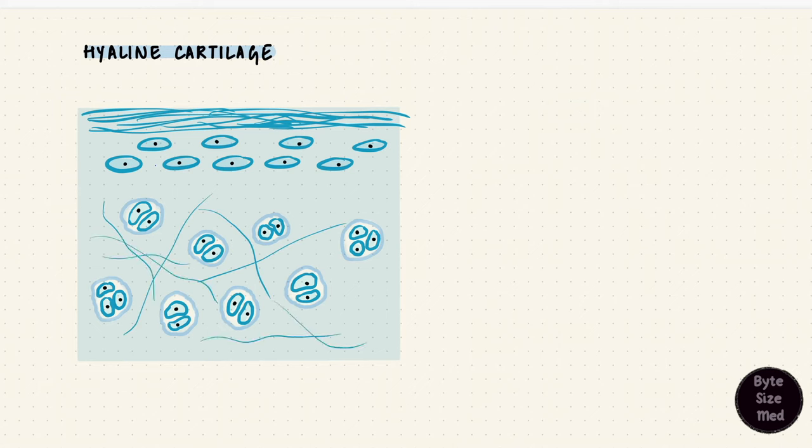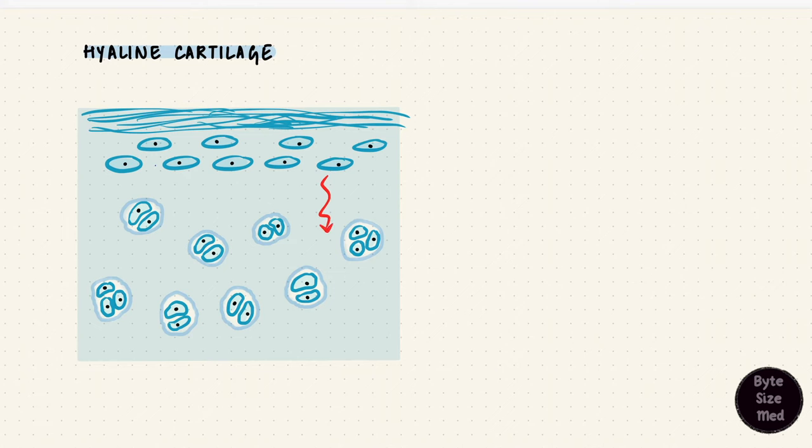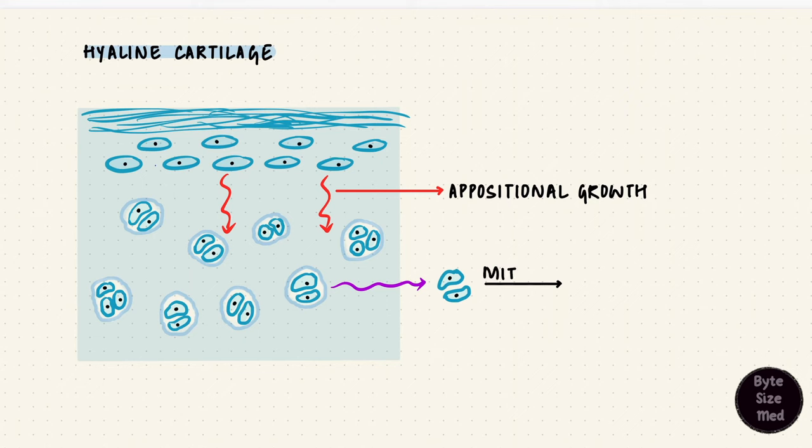The fibers in the extracellular matrix of hyaline cartilage are predominantly type 2 collagen, but the perichondrium, being dense connective tissue, has more type 1 collagen. The chondroblasts in the perichondrium thus can form chondrocytes and they can synthesize the extracellular matrix. And that type of cartilage growth is called appositional growth where the cells in the perichondrium give rise to more cartilage. This is versus growth by mitotic division of the chondrocytes where the chondrocytes themselves just divide and the cartilage grows. This is called interstitial growth. So there's appositional growth and interstitial growth. These are two ways by which cartilage can grow.